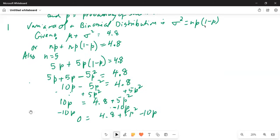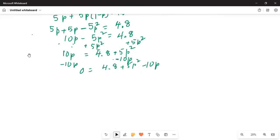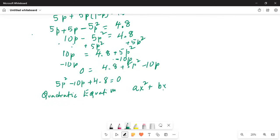I have 0 is equal to 4.8 plus 5p square minus 10p, because 10p on the left hand side cancels with the negative 10p. So we get 5p square minus 10p plus 4.8 is 0. Now we will use the quadratic equation formula.